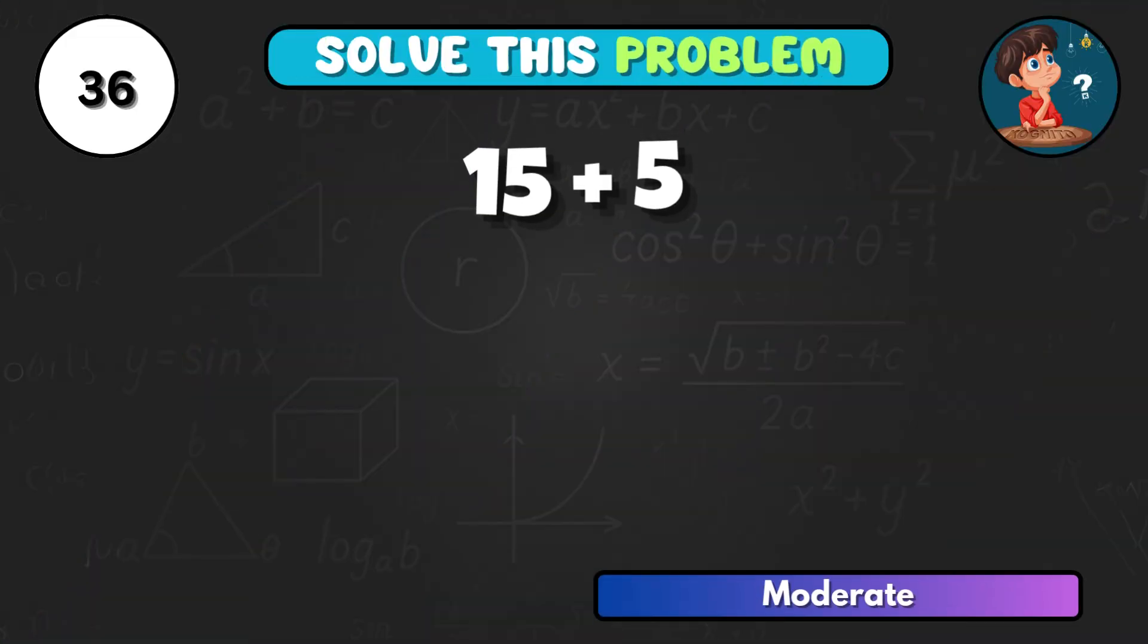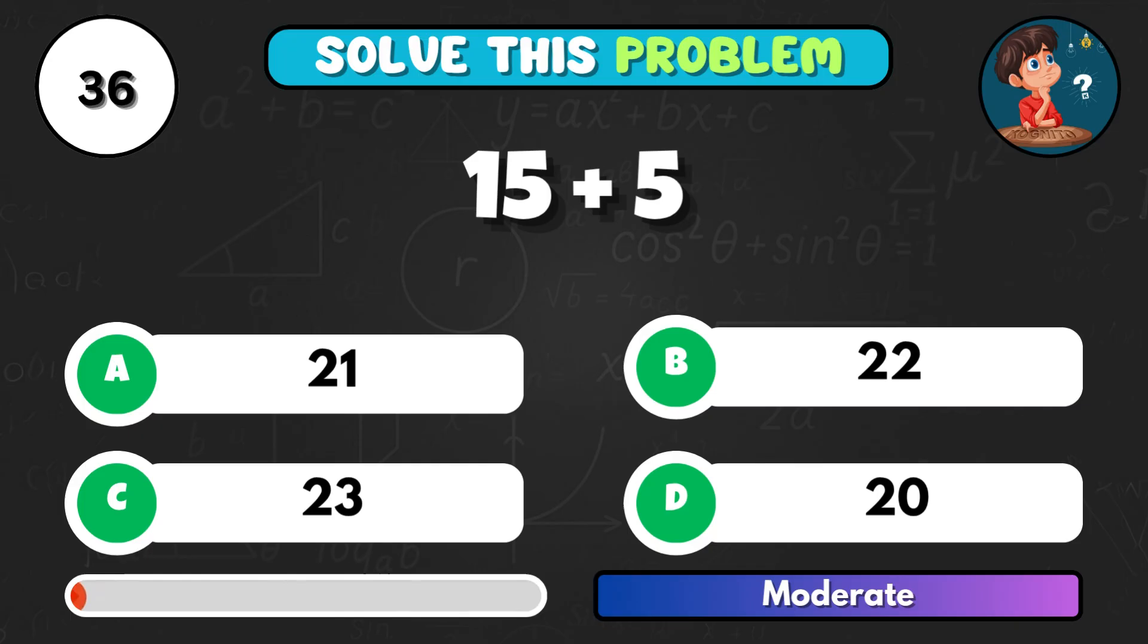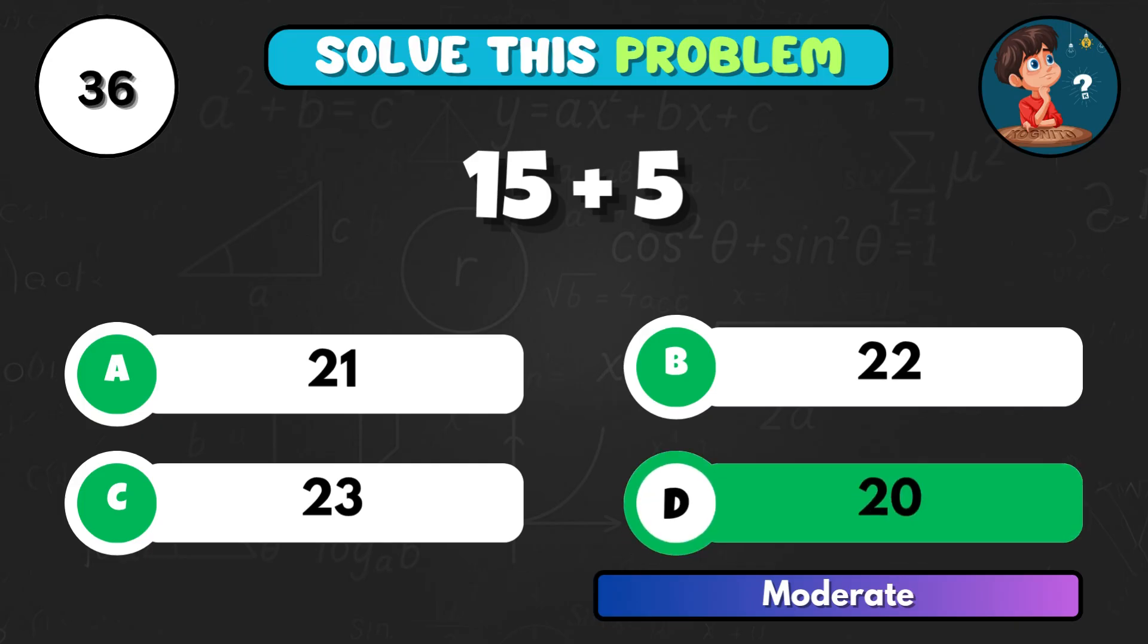15 joined with 5 equals. Correct answer D, total is 20.